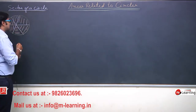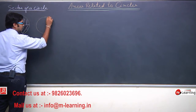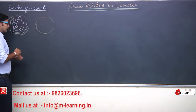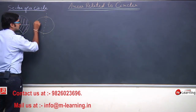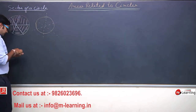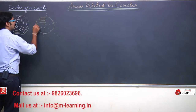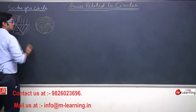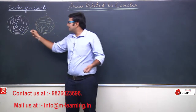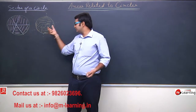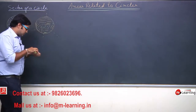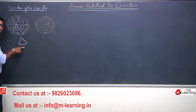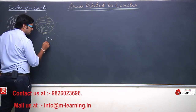Similarly, jab hum cake ko cut karate hain, toh cake bhi circular hota hai. In the cake also, what you will find is, jab hum isay cut karengi, then again you will find there are six parts made of this cake. And when you pick any part of the cake or any part of the pizza, ek piece uthata ho, toh wo piece kuch is tarah ke shape ka dikhai deta hai.